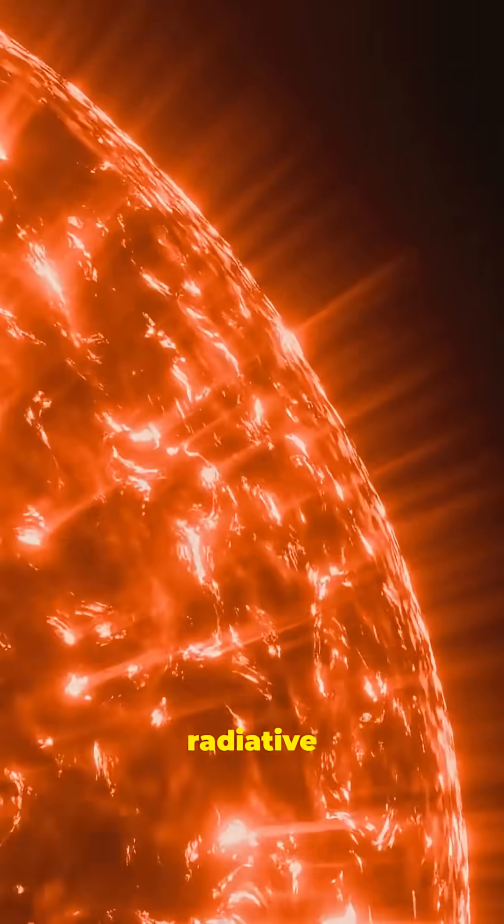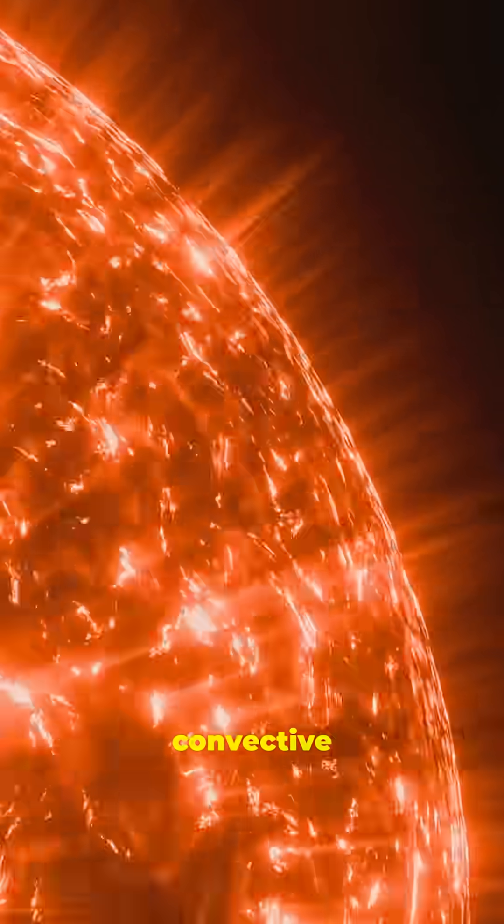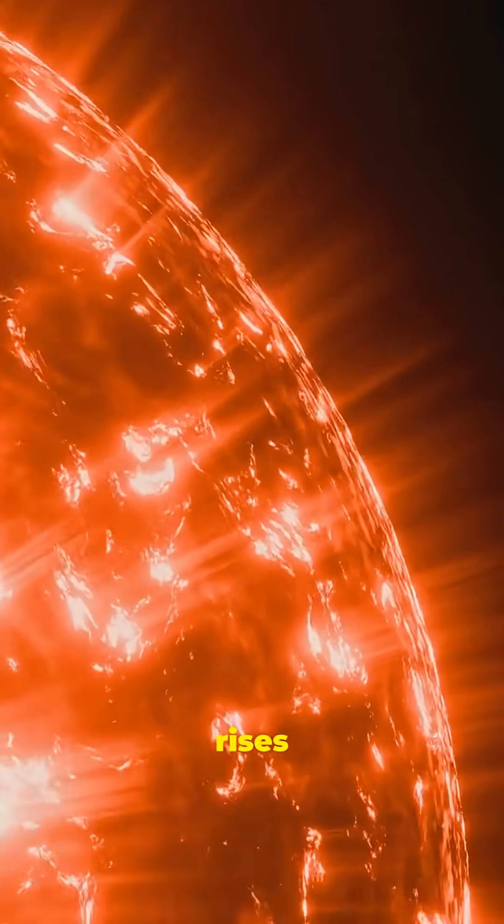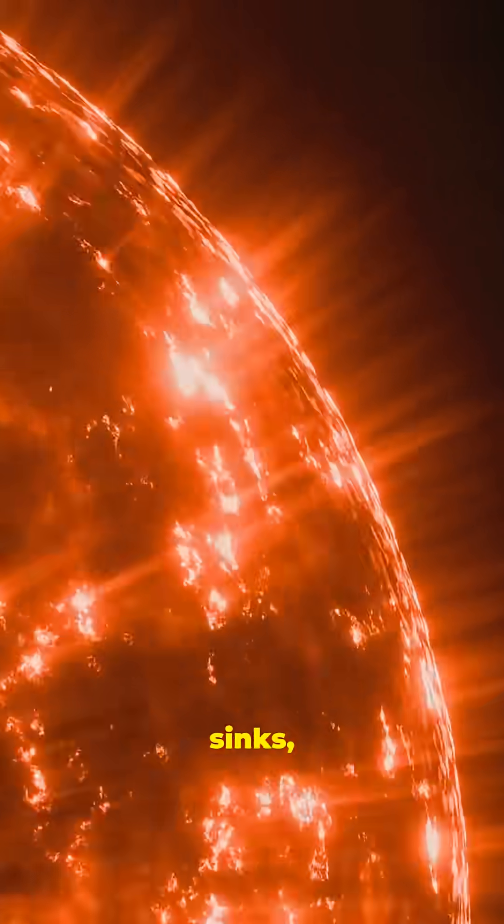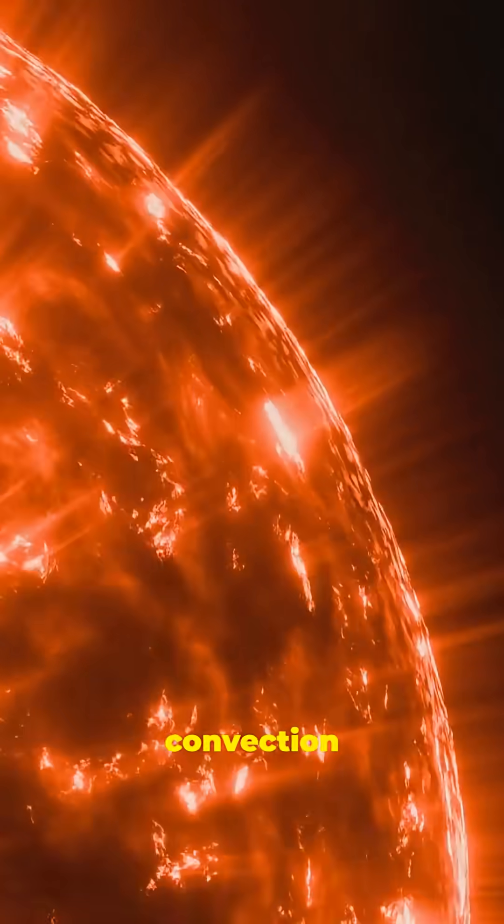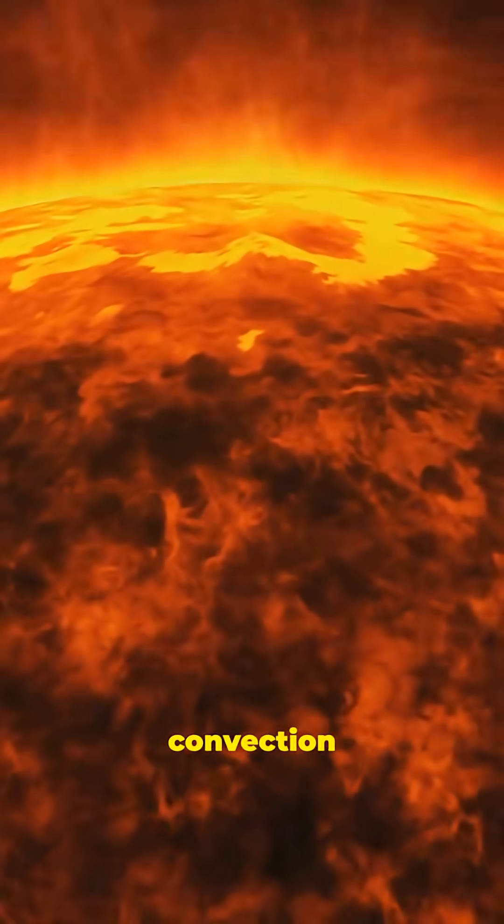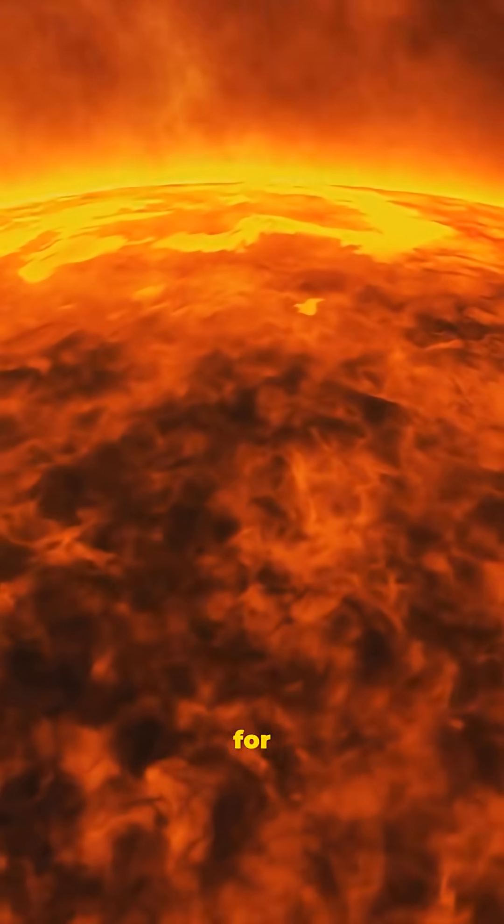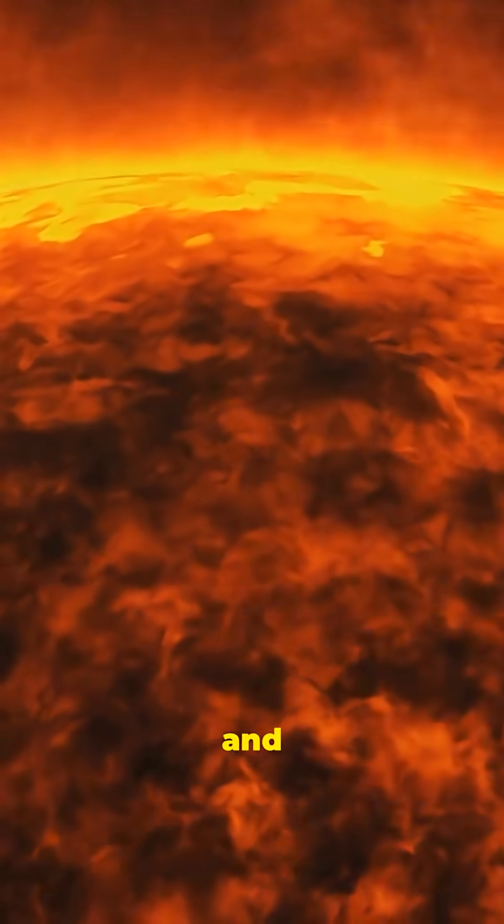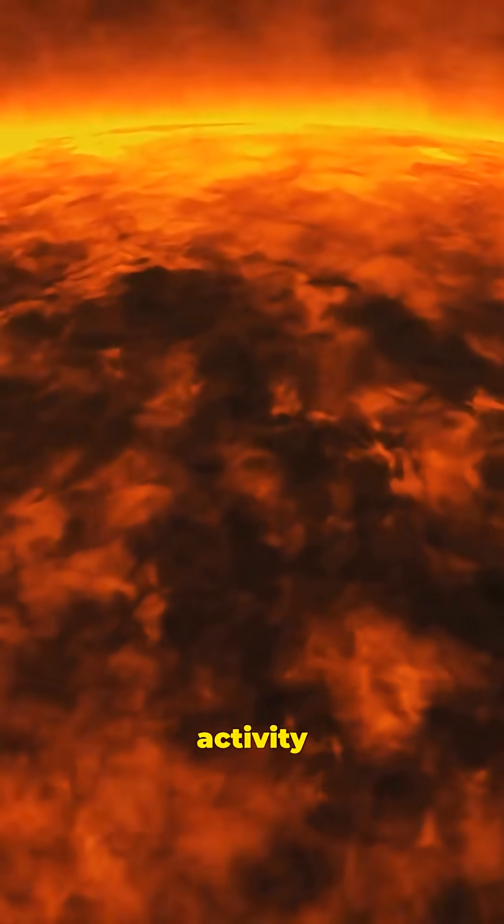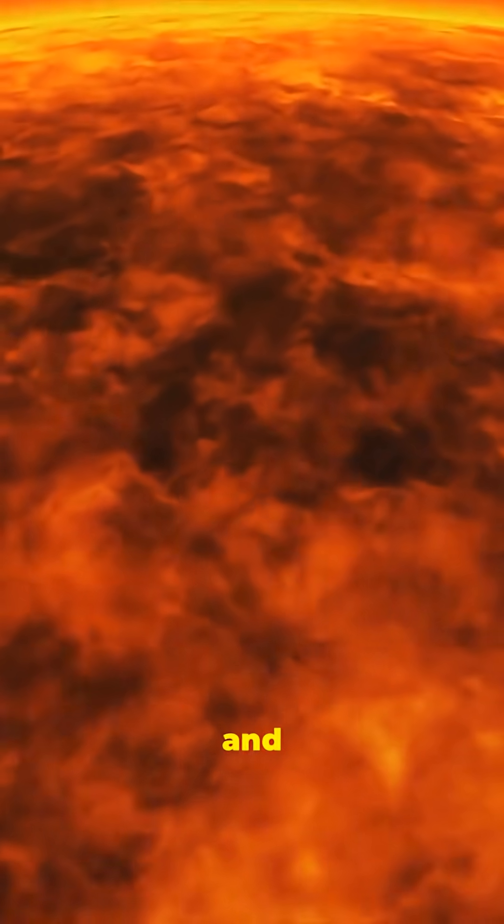Above the radiative zone lies the convective zone where hot plasma rises and cooler plasma sinks, creating massive convection currents. These convection currents are responsible for the Sun's surface texture and contribute to solar activity such as sunspots and flares.